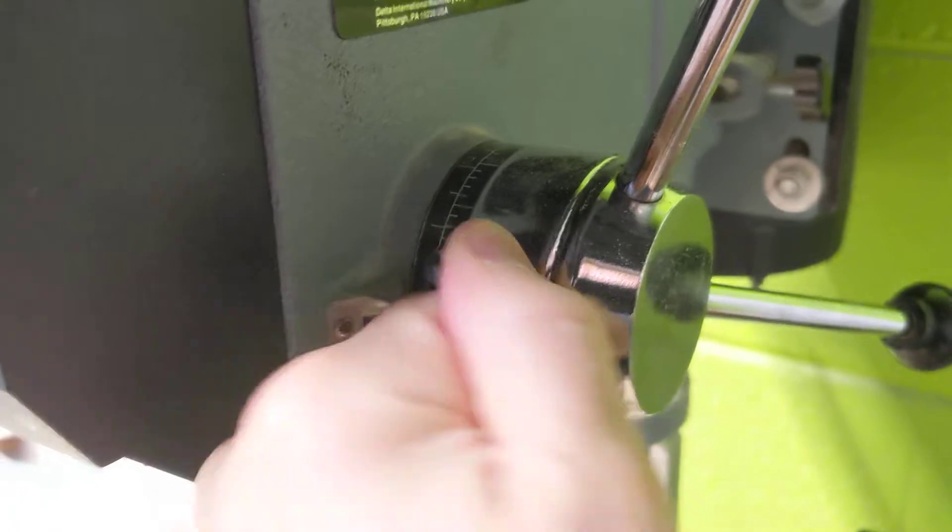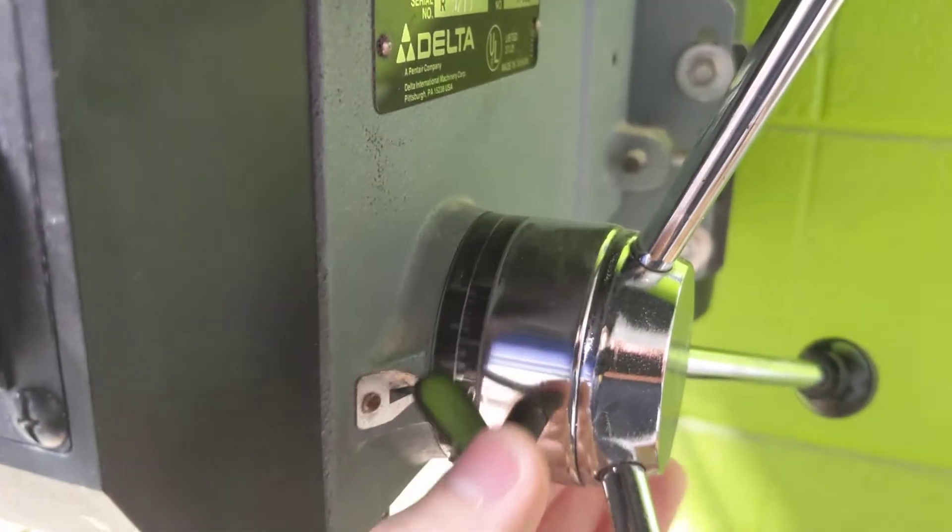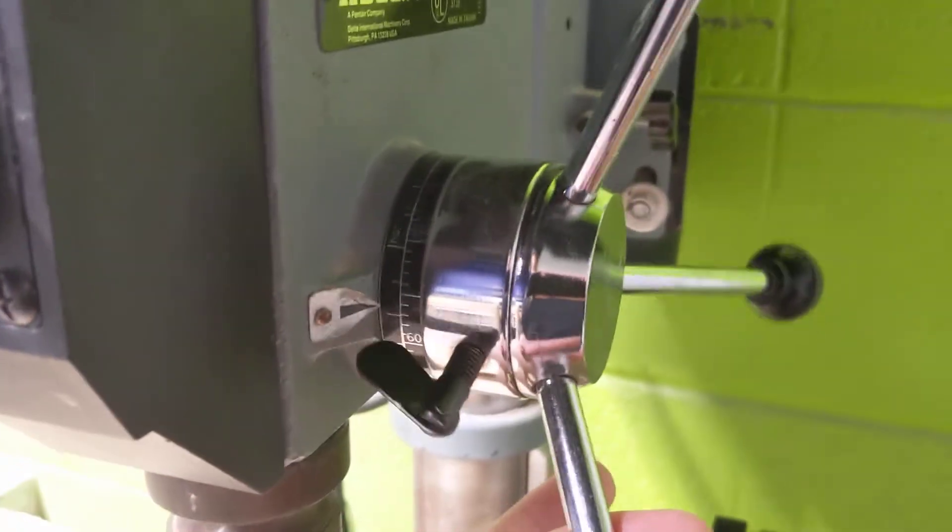I go lefty-loosey on this part right here. Don't pull it out of the way, just enough so then this part here can spin independently of the part here. So notice we can actually see numbers on here.